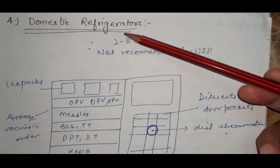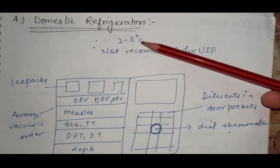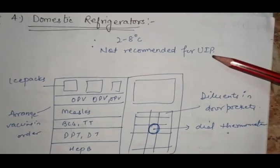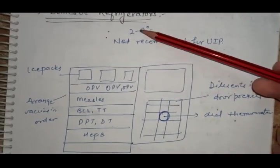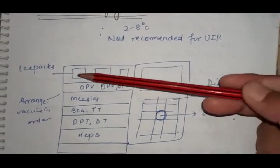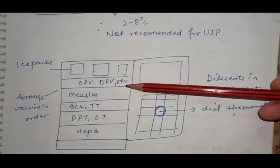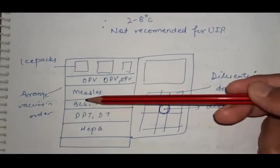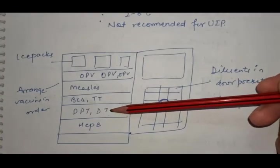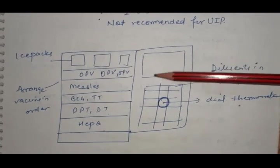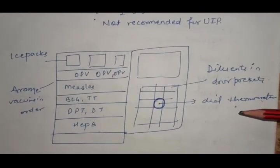Fourth is domestic refrigerator. Temperature maintained is 2 to 8 degrees Celsius, but not recommended for universal immunization program. Above are ice packs, below ice packs is OPV, below OPV is measles, then BCG, TT, DPT, DT and Hepatitis B. Diluent on the side of door, with dial thermometer to check temperature.